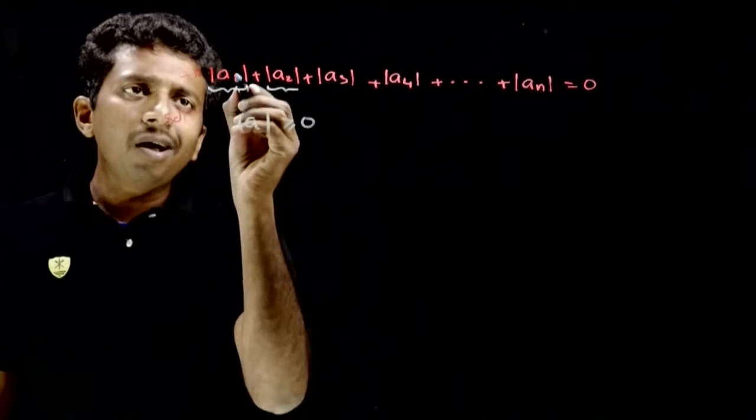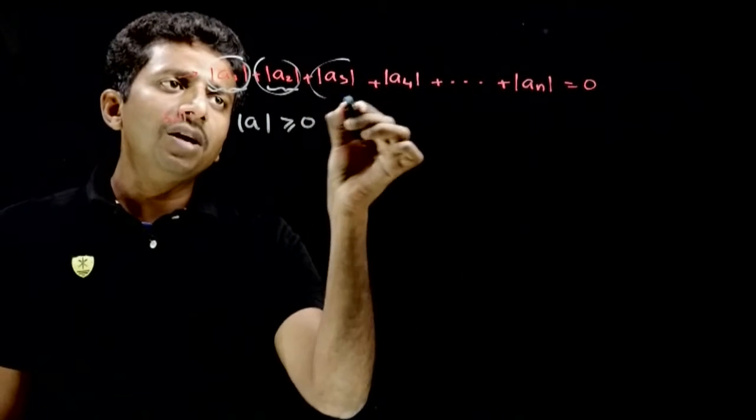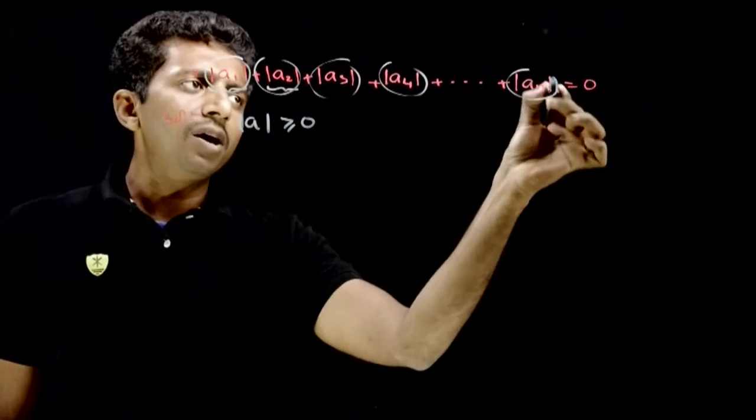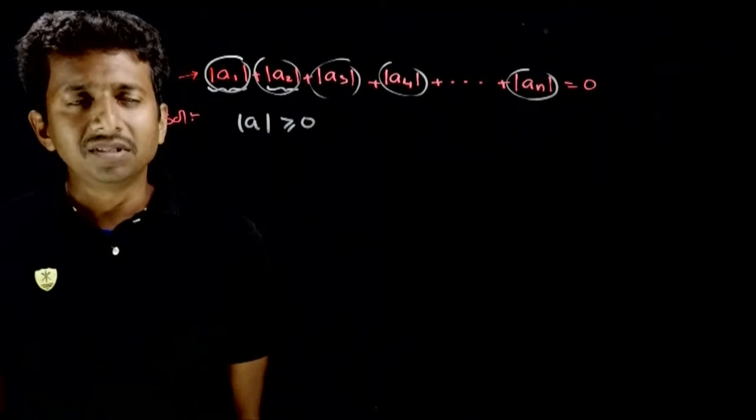the conclusion is all these individual terms, mod a1, mod a2, mod a3, mod a4 up to mod an, all of them have to be equal to 0.